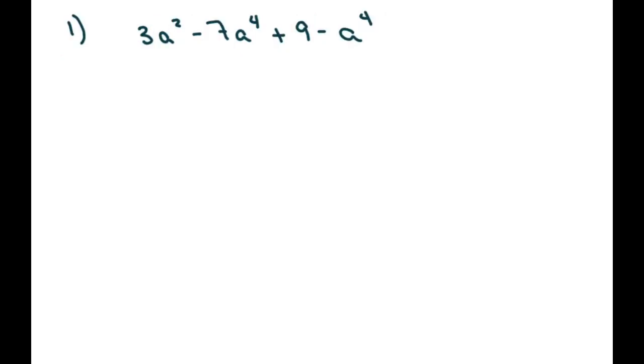So the first one is this one, and writing it in standard form would mean we're going to go in order of our degrees. So the largest degree, in this case 4, and then go in descending order. So we have negative 7a to the fourth minus a to the fourth. That's negative 8a to the fourth. Then we have the next one is plus 3a squared, and then plus 9.